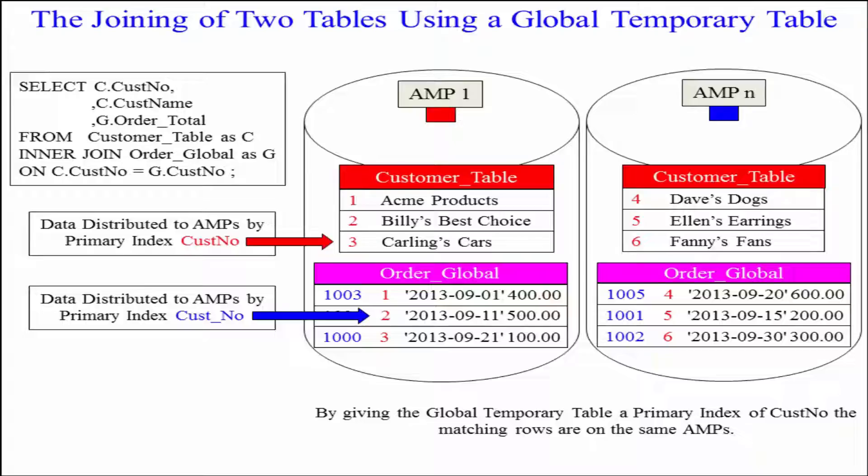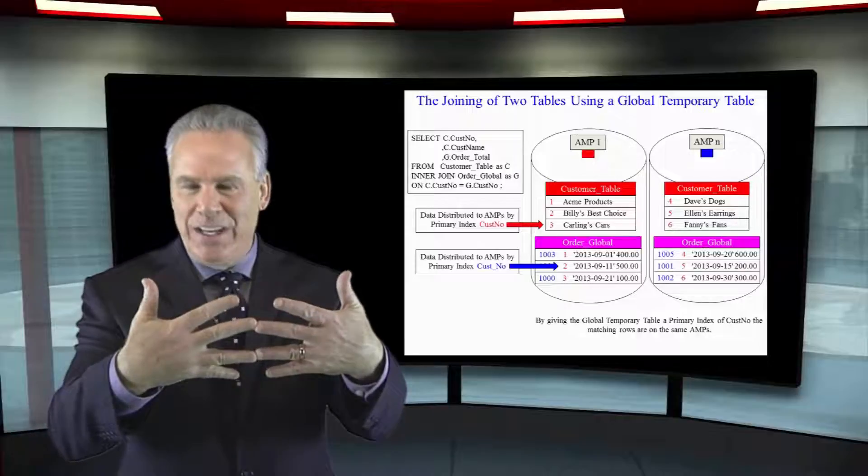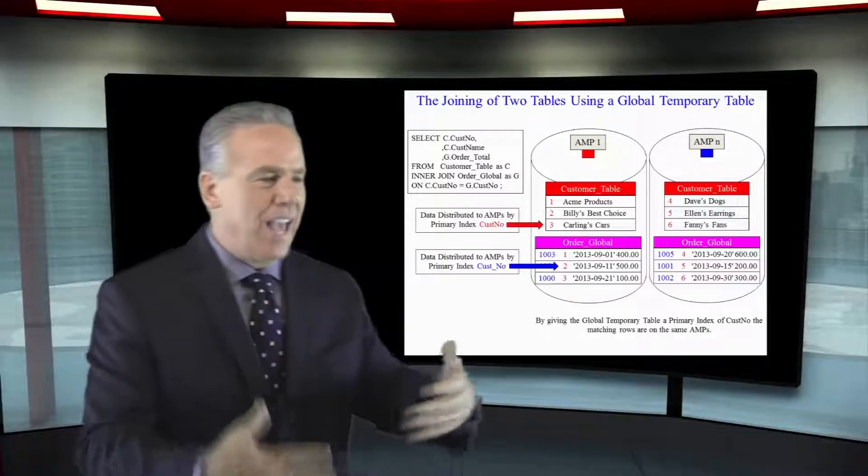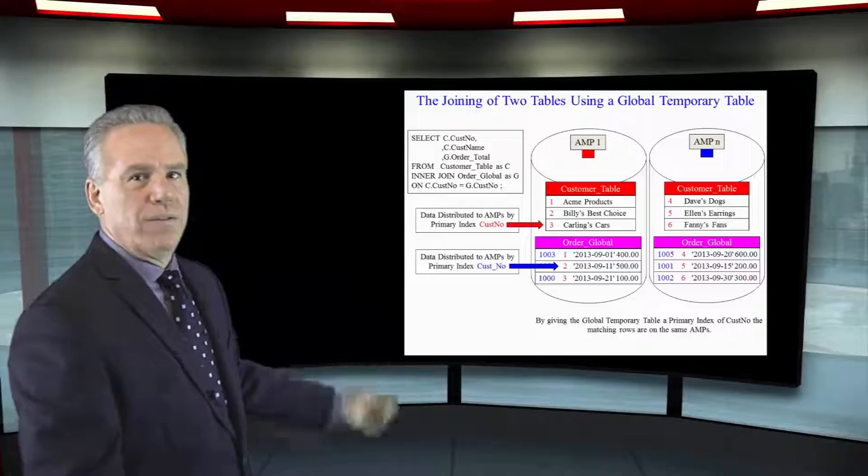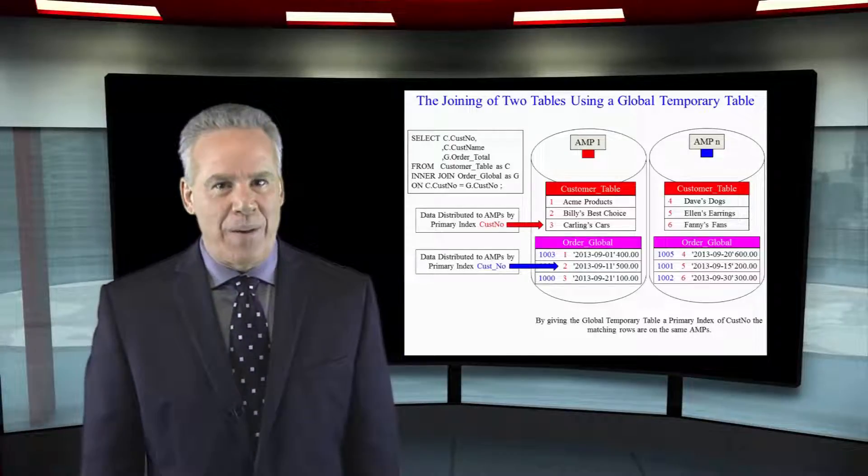This is the fastest performing join that you're going to have that's joining two tables together in a merge equality situation and that's why you give the global temporary table a good primary index.